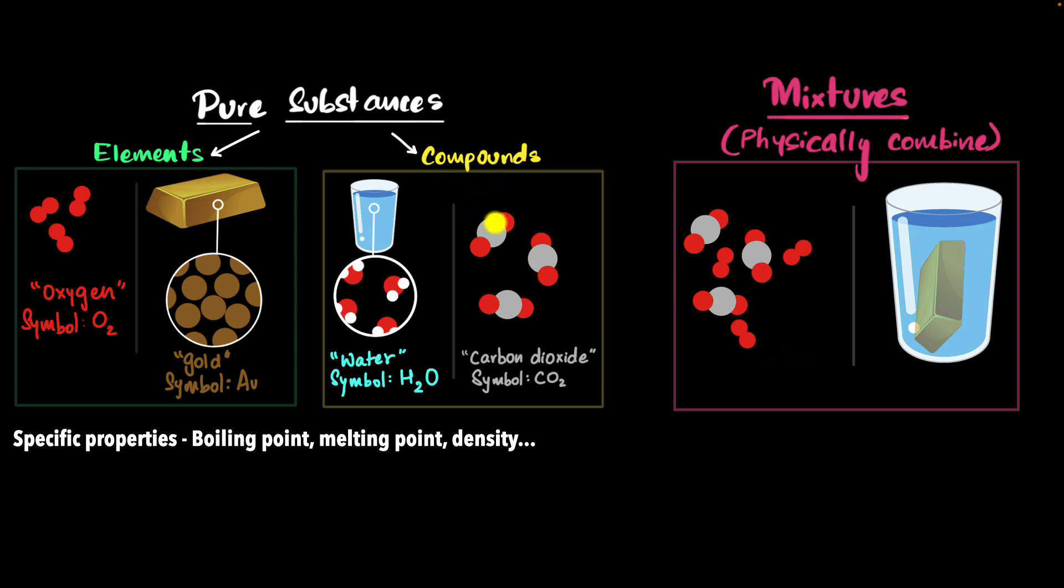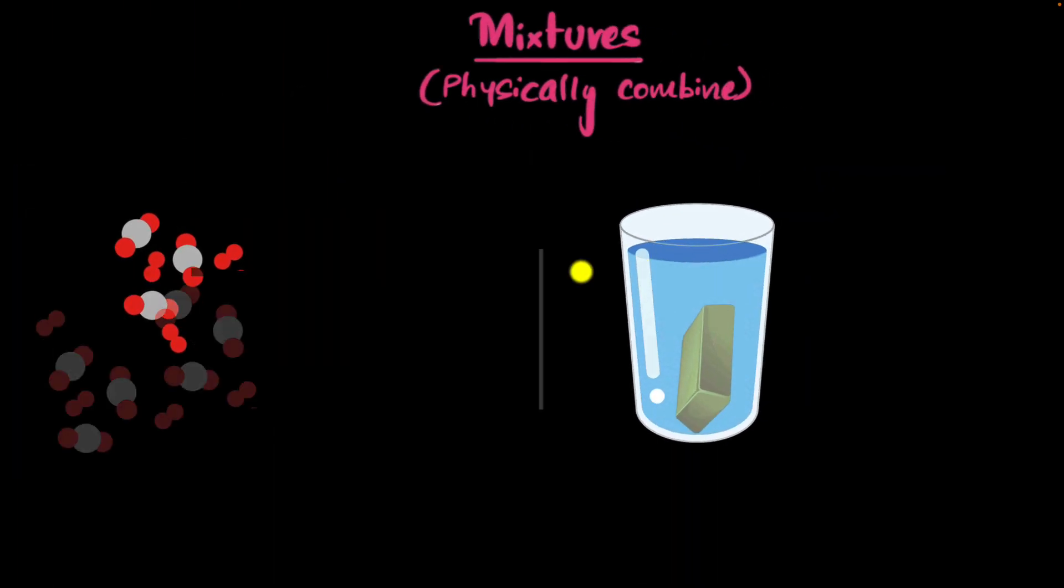But in contrast, compounds are where atoms are chemically combined. They're chemically bonded together. You cannot separate these atoms by physical processes. So compounds are still pure substances. Now, guess what? Even mixtures can have different types. So let's investigate them a little bit more.